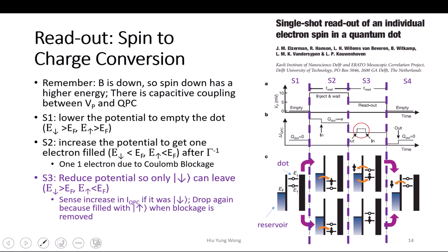First of all, the magnetic field is pointing down — just make sure you remember. The spin which is pointing down is going to have higher energy. So let us see how you do the readout. First I have a reservoir. Then this is the quantum dot — it has two levels: spin up or spin down. Why does it have two levels? Because of the magnetic field. Spin up has lower energy because the magnetic field is pointing down.